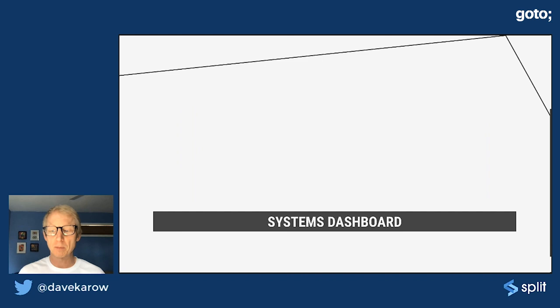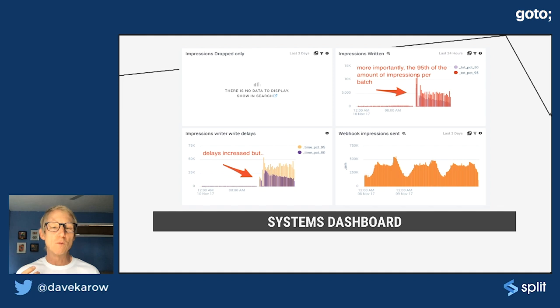Here's a systems dashboard from our own product. We were rolling out some changes and suddenly we saw these huge spikes and we spent a lot of time on triaging and what have we changed and why is this happening? What's going on? And we'll come back to this in a minute, but suffice to say that things weren't quite as they appeared.